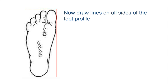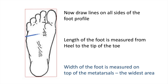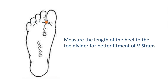Draw lines on all sides of the foot profile. The length of the foot is measured from the tip of the toe to the edge of the heel. The width of the foot is measured over the metatarsals. For a better vista of fitment, please ensure to measure the distance between the heel and the toe divider and record it in the measurement chart.